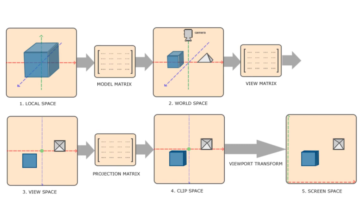All the vertices will be specified as local to that object. The second is the world space, which is the global coordinate system of our scene. The vertices specified in local space will be multiplied by a matrix called the model matrix, which can translate, move, rotate, or scale those vertices, and the result will be the vertices relative to the global scene.